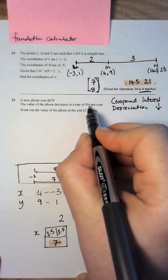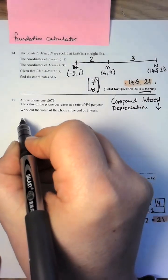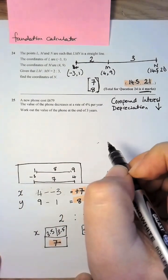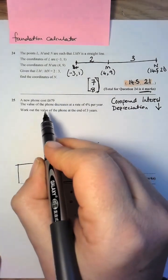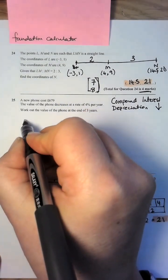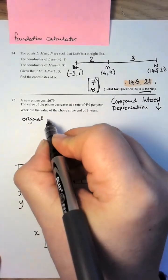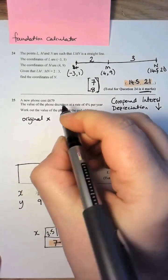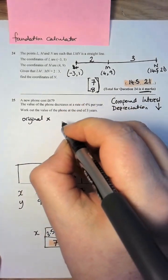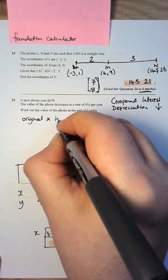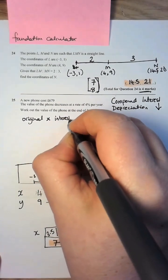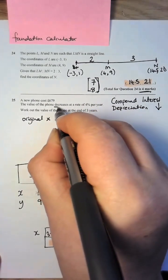I know that the compound interest is the amount, or the new phone, that's fine, so it's the original amount multiplied by the multiplier, this is the interest as a decimal, but this is a decrease.